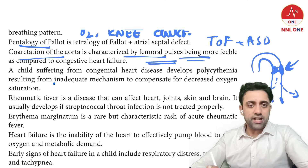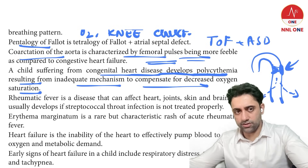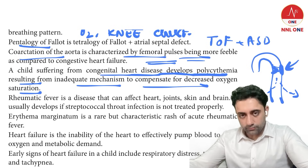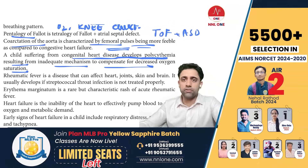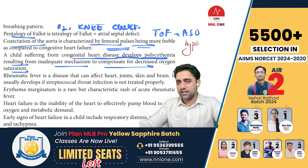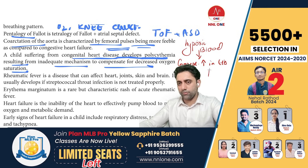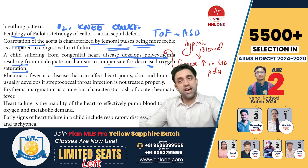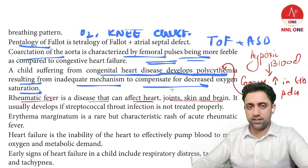A child with cyanotic congenital heart disease develops polycythemia as a compensatory mechanism for decreased oxygen saturation. Hypoxia causes a compensatory increase in hemoglobin production, making the blood very thick — this is polycythemia. Rheumatic fever affects the heart, joints, skin, and brain, and develops when streptococcal throat infection is not treated. Erythema marginatum is one manifestation of acute rheumatic fever.